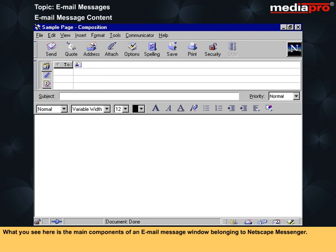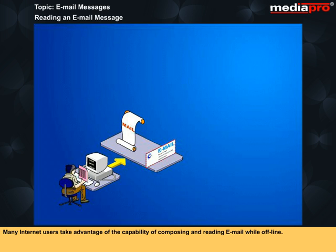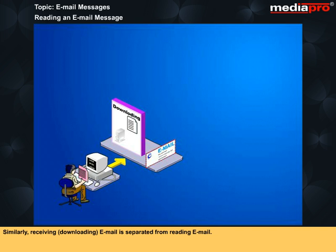What you see here is the main components of an email message window belonging to Netscape Messenger. Each component of this email message window is described in the table. Many internet users take advantage of the capability of composing and reading email while offline. This allows composing email to be separated from sending and uploading email. Similarly, receiving and downloading email is separated from reading email.